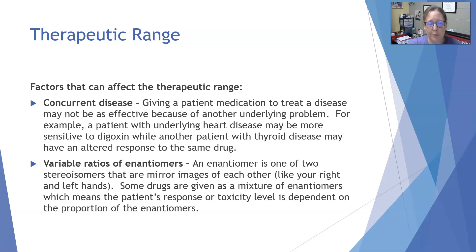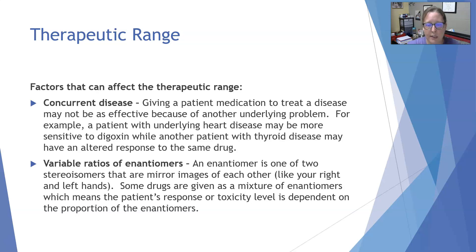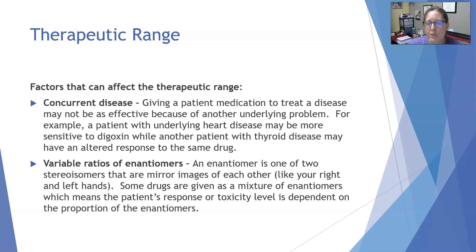Variable ratios of enantiomers: an enantiomer is one of two stereoisomers that are mirror images of each other, like your right and left hands. Some drugs are given as a mixture of enantiomers, meaning the patient's response or toxicity levels could depend on the proportion of those enantiomers. Additionally, formulations can differ slightly between generic and brand-name drugs, and who manufactures the drug can affect how the patient metabolizes it and whether it is effective or toxic.